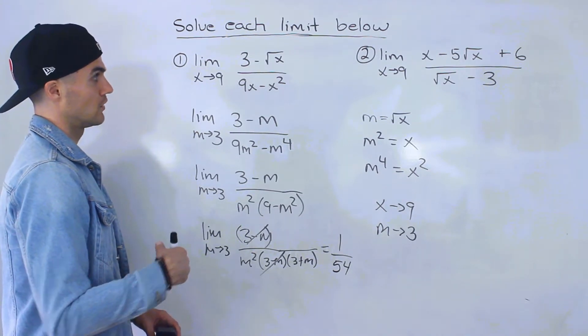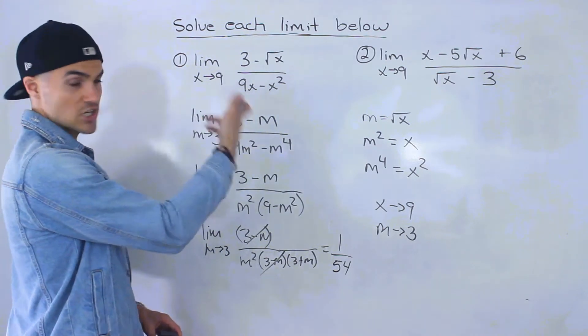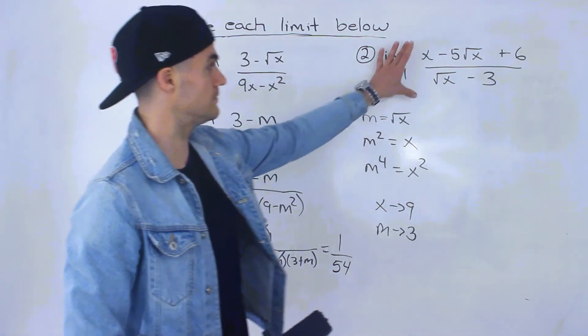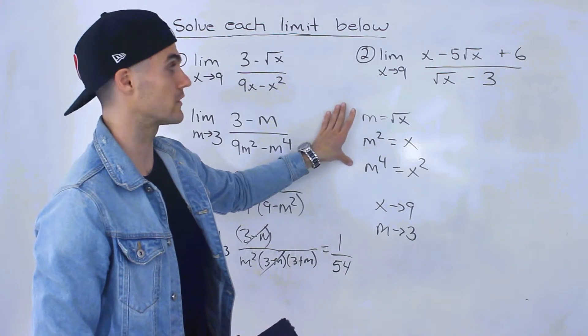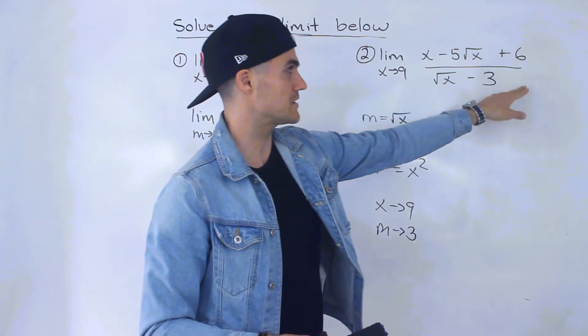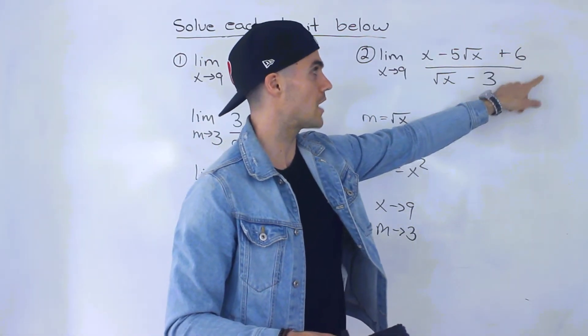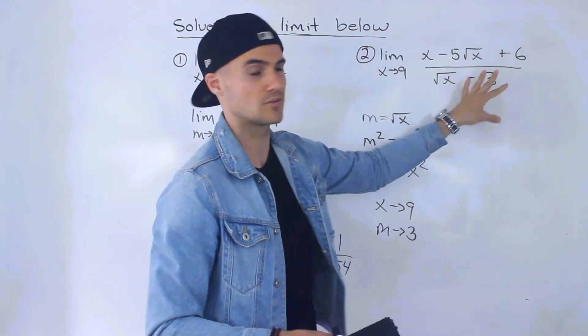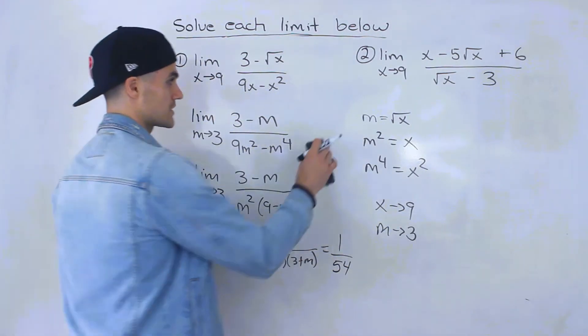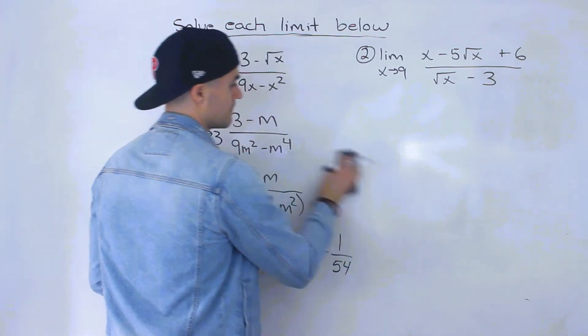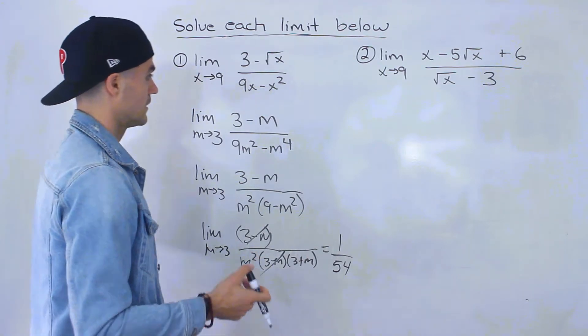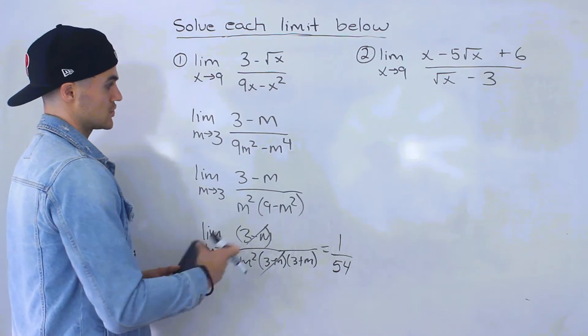Personally, for this specific limit, I prefer the rationalization way. But for the second problem, I'll prefer the change of variable method. Rationalizing the second one would require a lot of foiling and get messy. It depends on the limit. It takes experience to know which method is best, but you may have your own preference. As long as you get the correct answer, that's what matters.